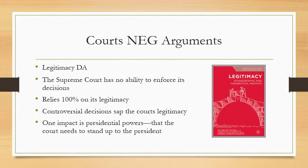The first negative argument is the court legitimacy dis-ad. The Supreme Court has no tangible ability to enforce its decisions. It doesn't have the military, it doesn't have the police, it doesn't have any money. How do court decisions get enforced? The court relies 100% on its legitimacy — its persuasive power to convince other branches to go along with it. If the court doesn't have legitimacy, it can't enforce its decisions.